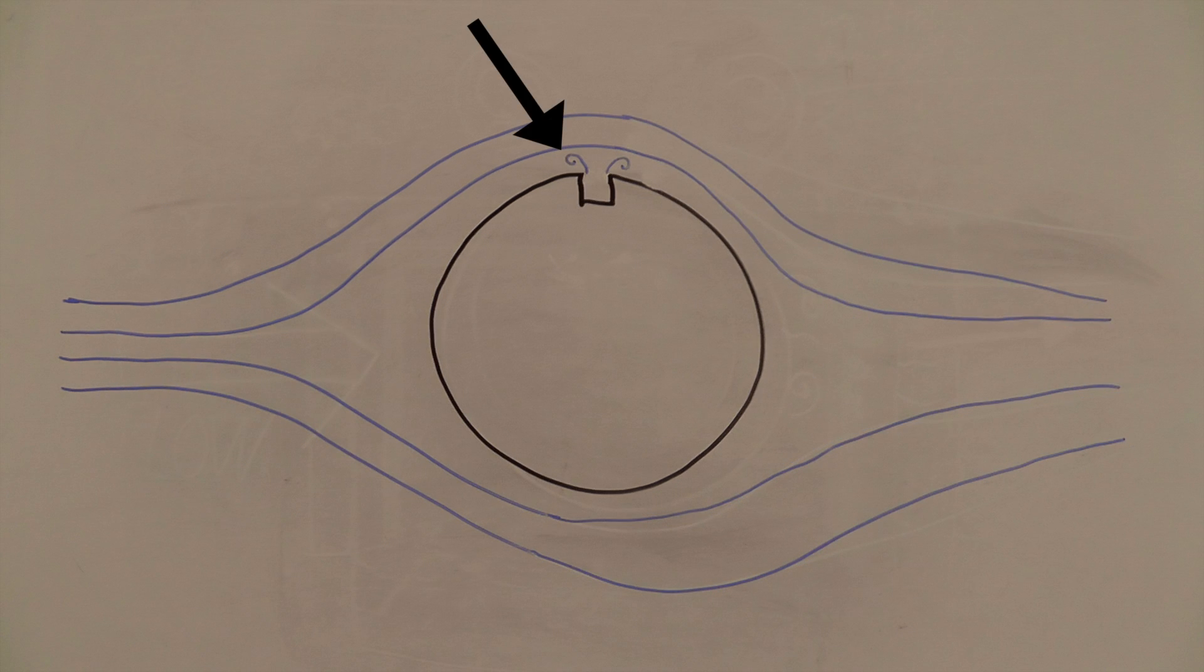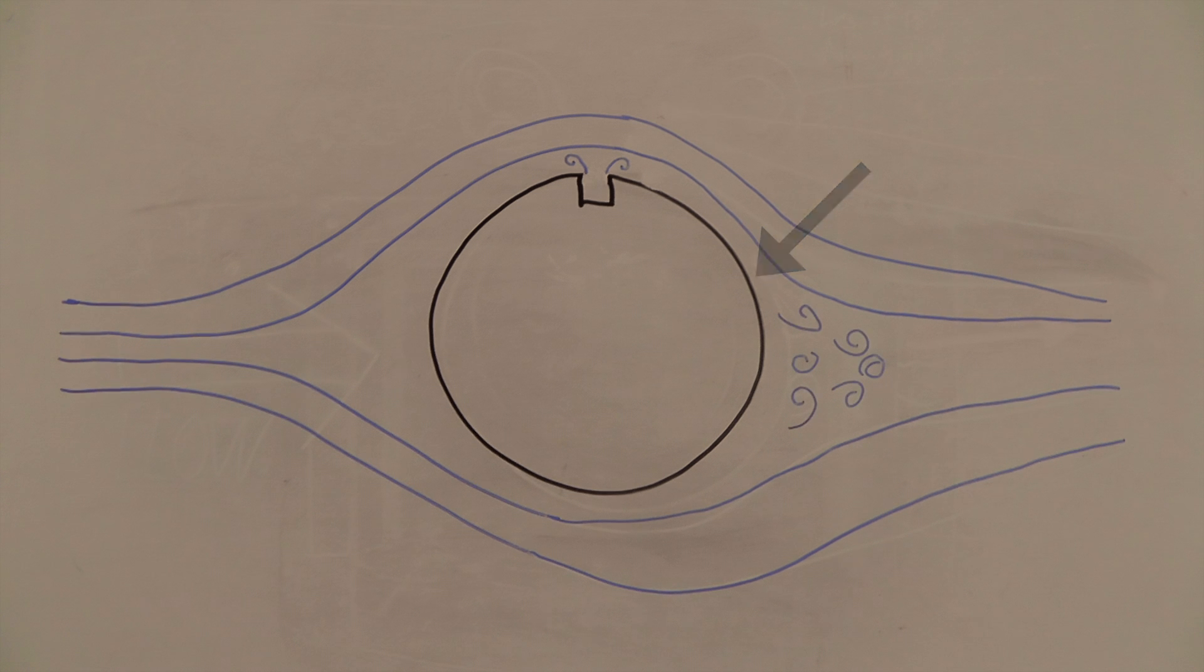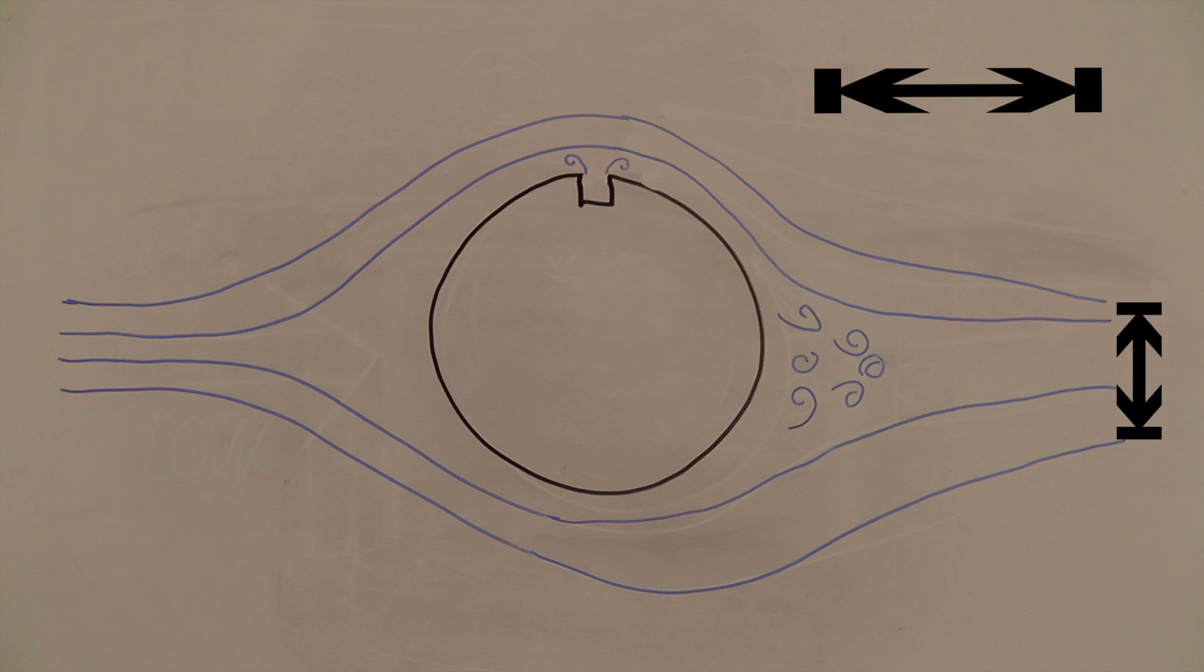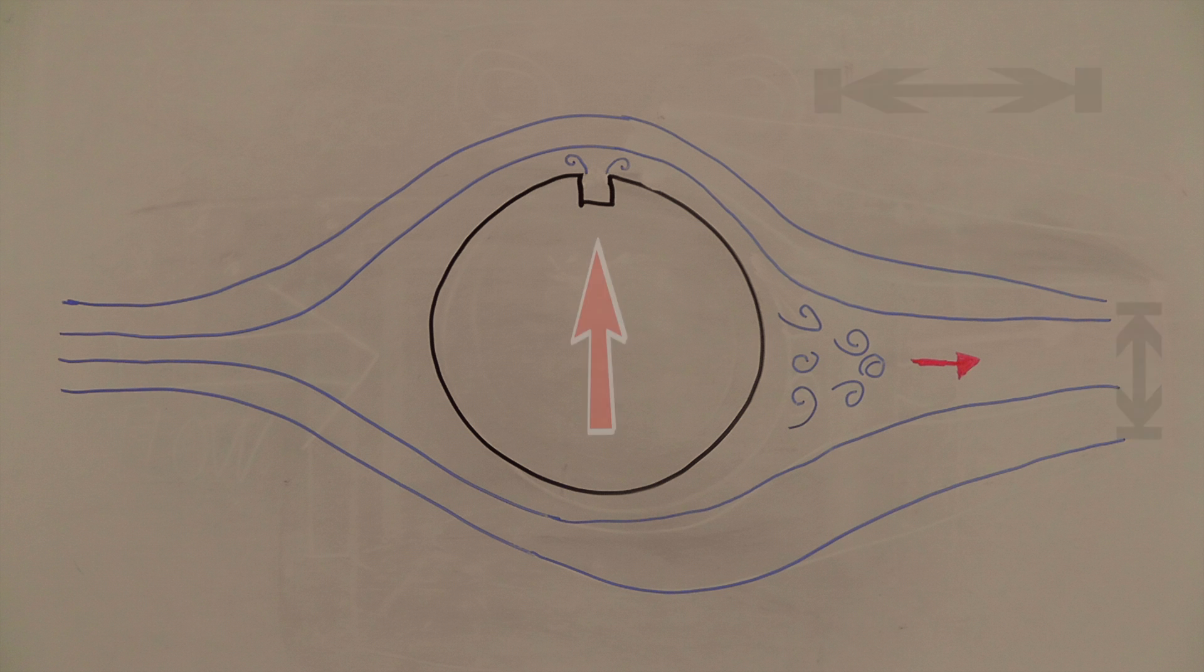When a synthetic jet is activated, it fires vortices into the boundary layer of the fluid. The interaction of these vortices moves the separation layer downstream, while at the same time shortening the length and thickness of the wake, reducing the pressure differential, resulting in a reduction in drag, while also producing a lift force.